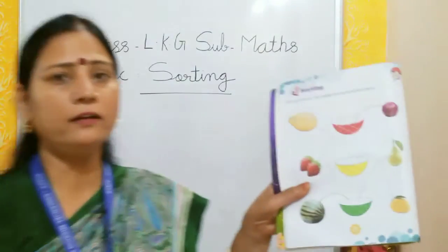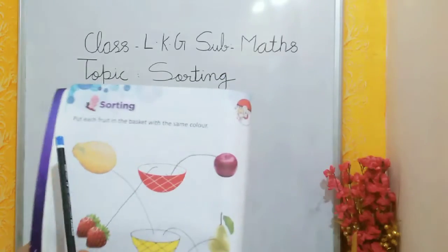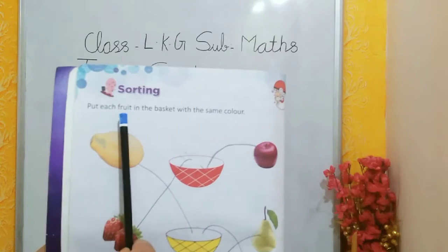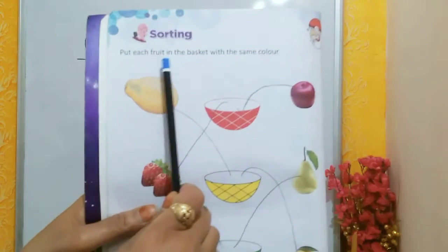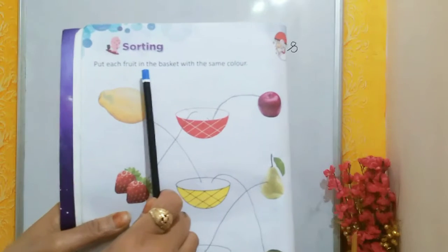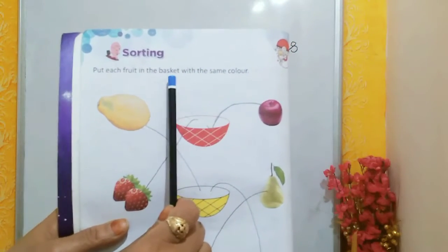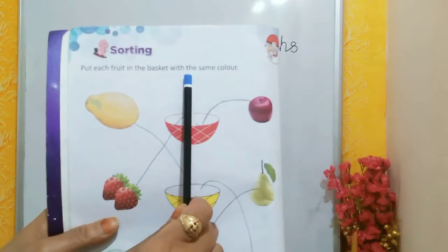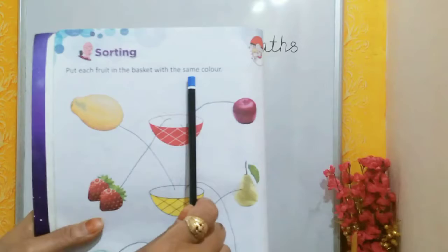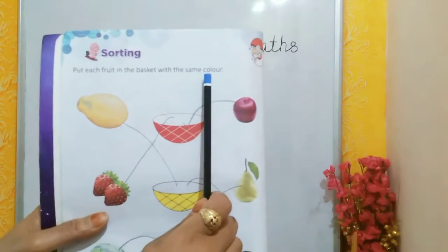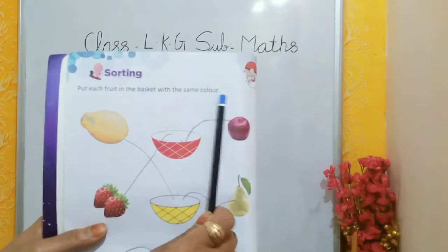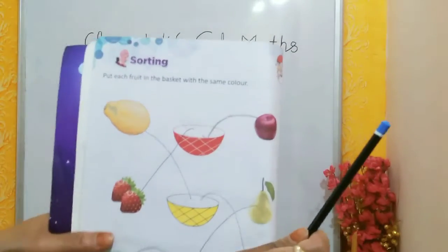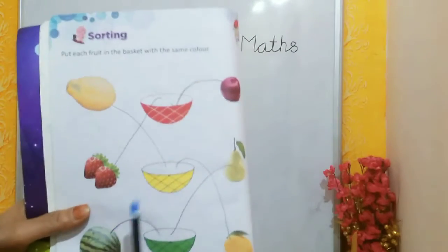Now look here. Put each fruit in the basket with the same color. We have to keep each different color fruit in its matching color basket.